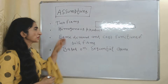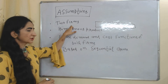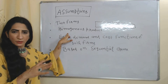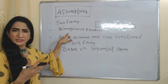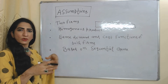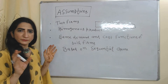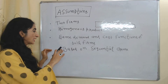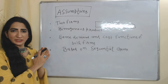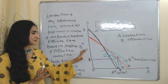Now we will look at the assumptions. There are two firms whose product is homogeneous, meaning their product is exactly the same. There are the same cost and demand functions for both firms, and this model is based on a sequential game.